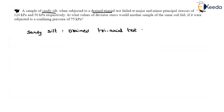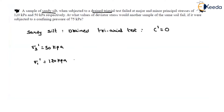For sandy silt under a drained triaxial test, effective cohesion c' equals zero, since sand is the major component and the test is drained. The given effective stresses are: effective minor principal stress σ3' = 50 kPa and effective major principal stress σ1' = 120 kPa. Now, for the new sample, the confined pressure or minor principal stress is given as 75 kPa, and we need to find the deviator stress at failure.